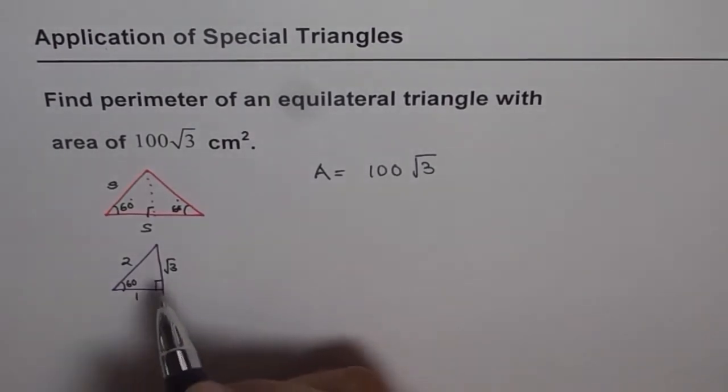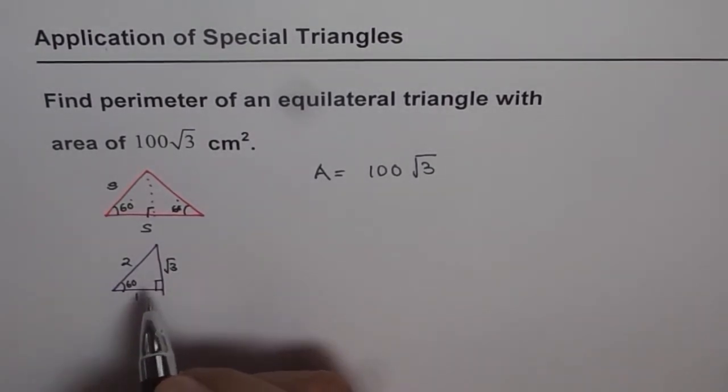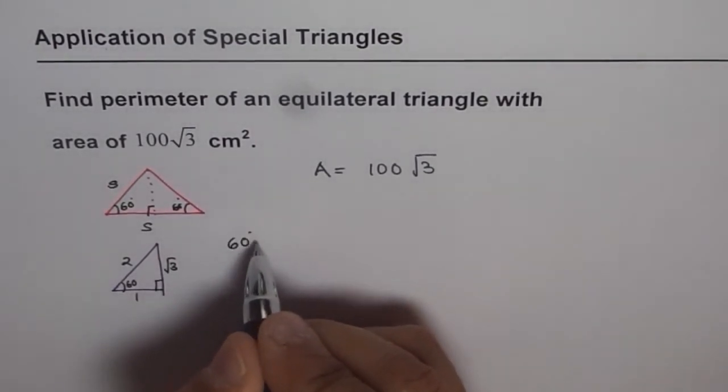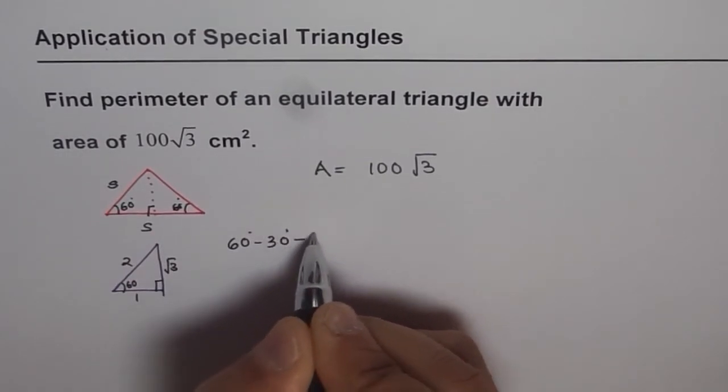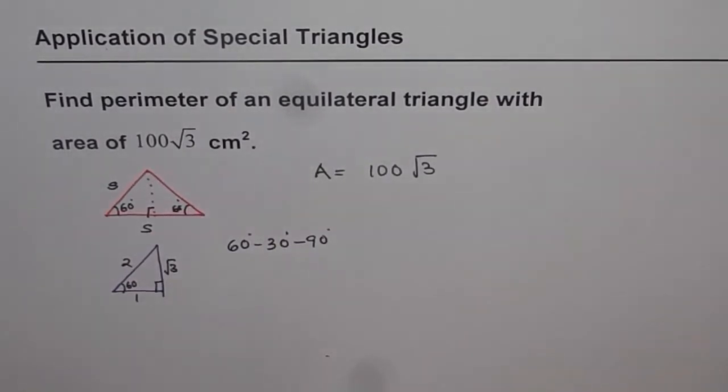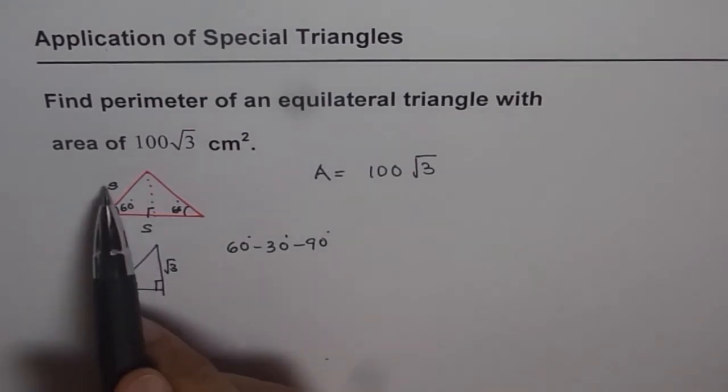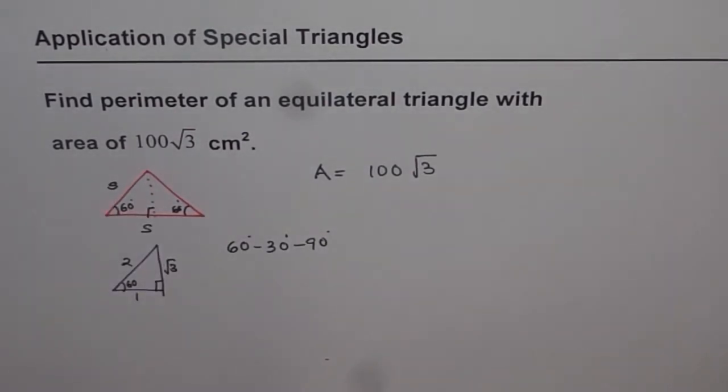So similar to the special triangle which is 60-30-90. So it is similar to the 60-30-90 special triangle. Now if the sides are s, then what is going to be the height?